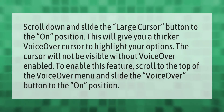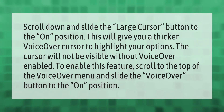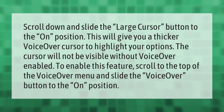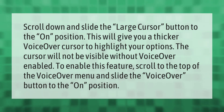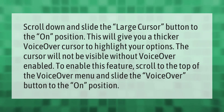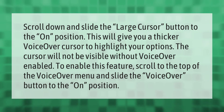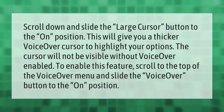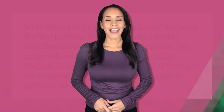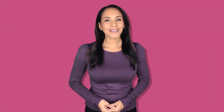Scroll down and slide the Large Cursor button to the on position. This will give you a thicker VoiceOver cursor to highlight your options. The cursor will not be visible without VoiceOver enabled. To enable this feature, scroll to the top of the VoiceOver menu and slide the VoiceOver button to the on position.